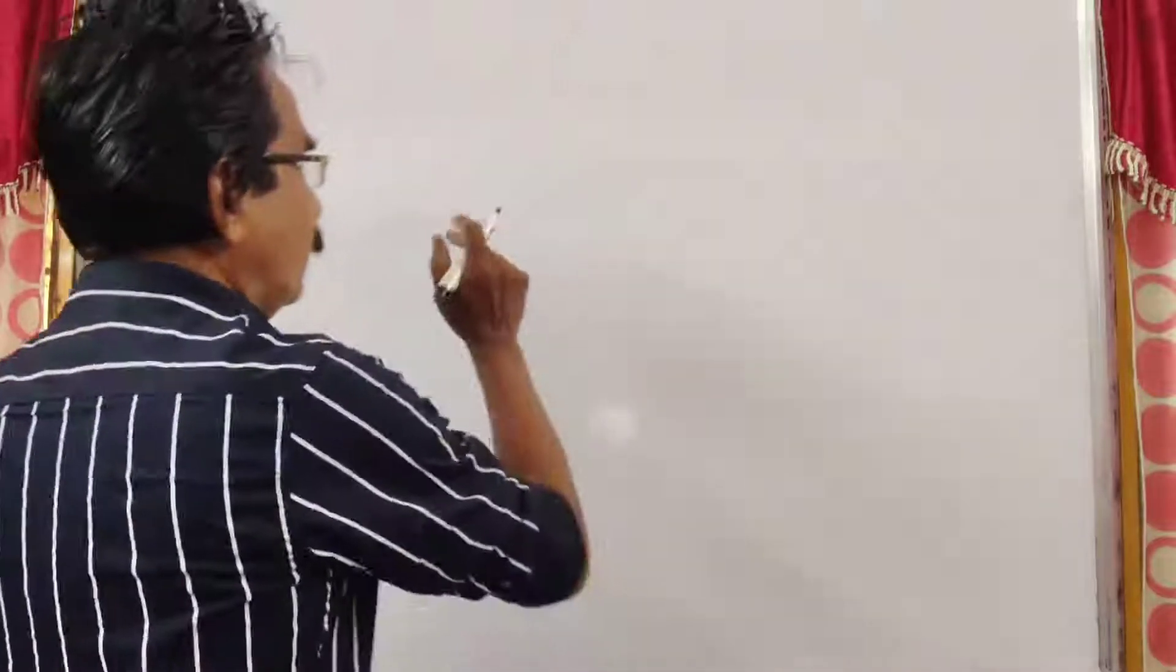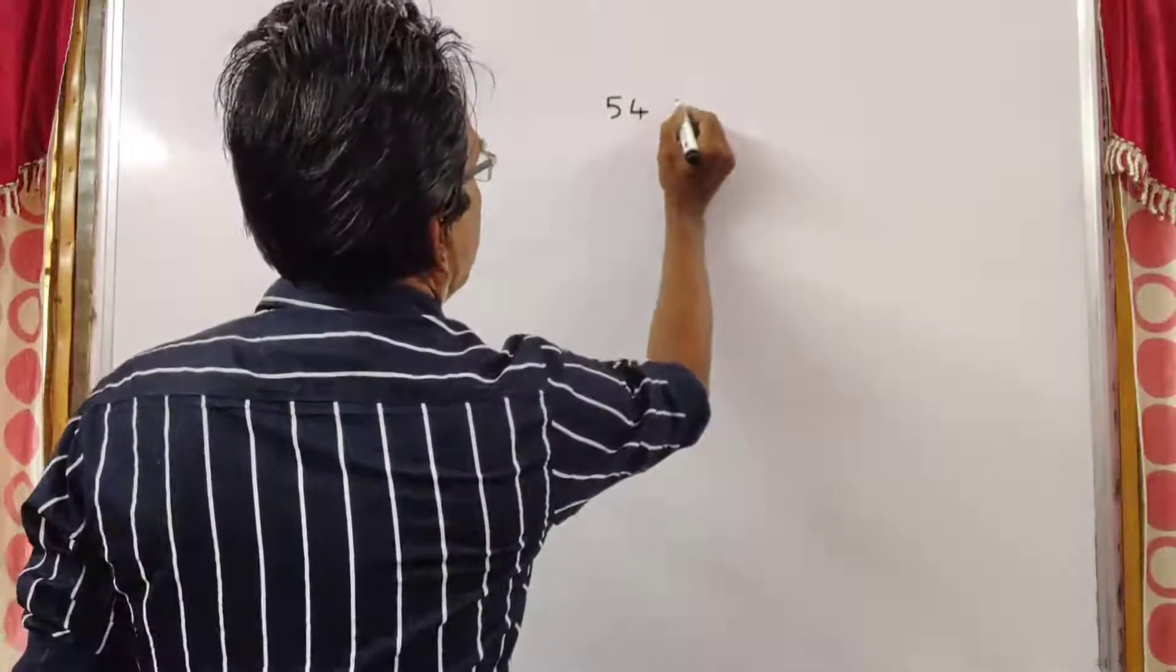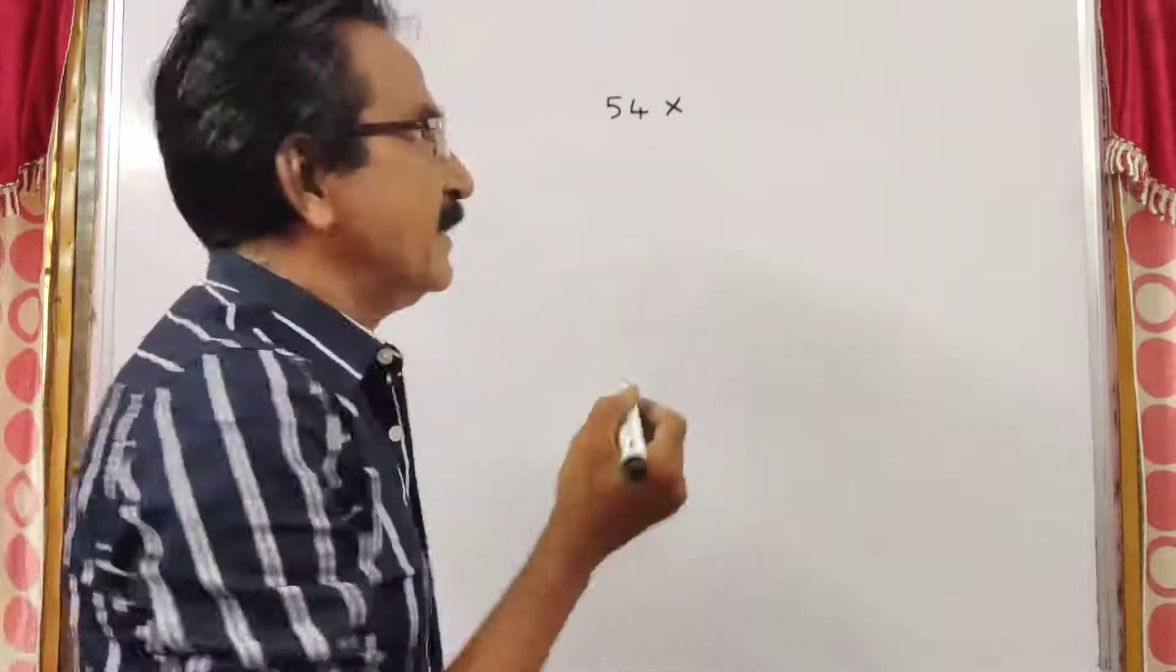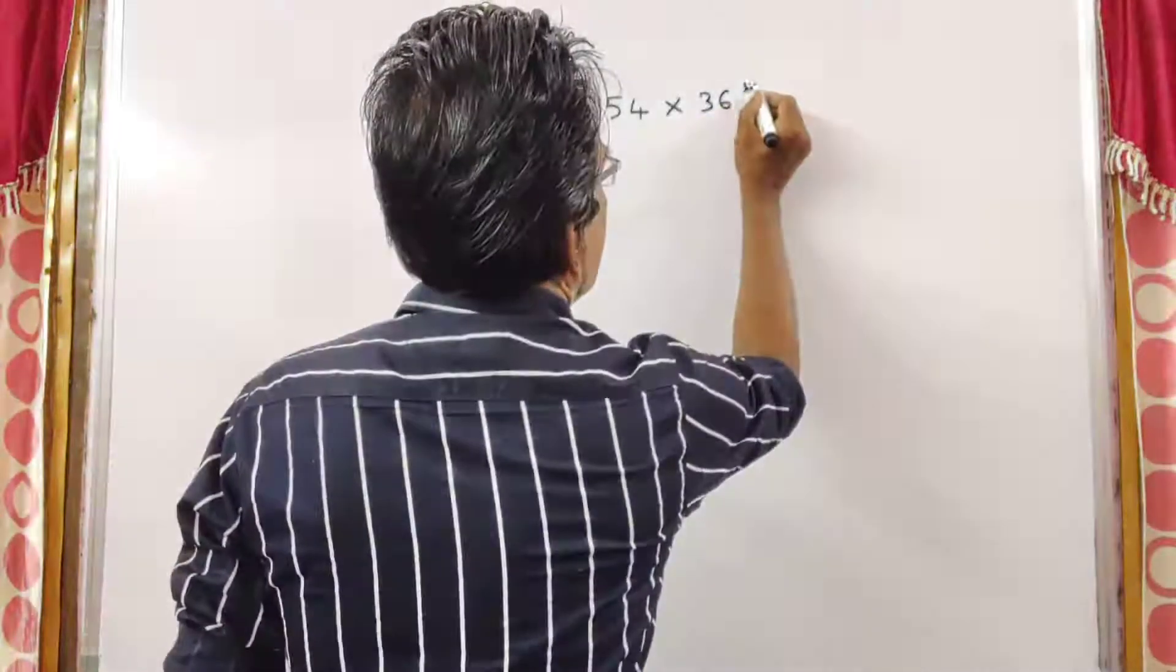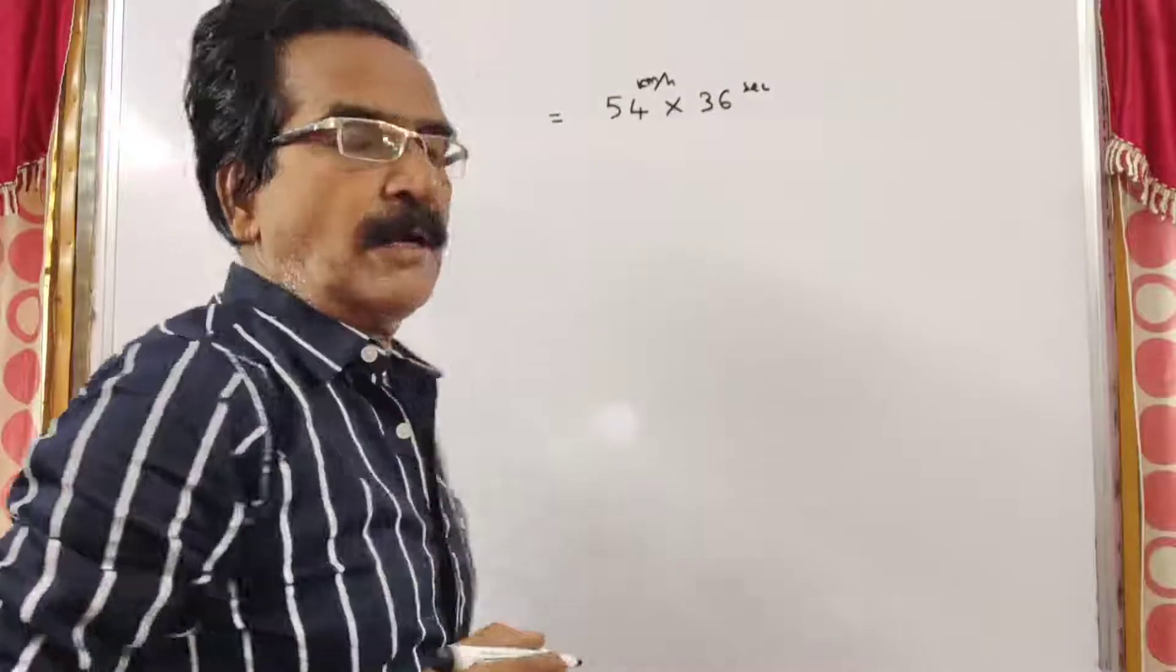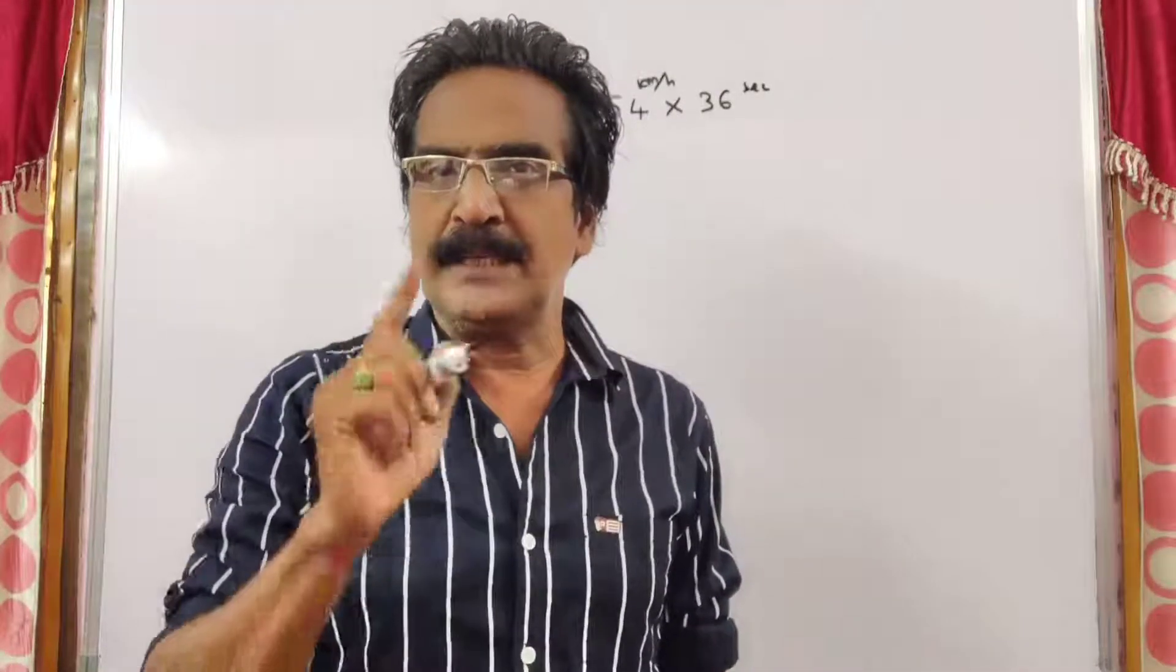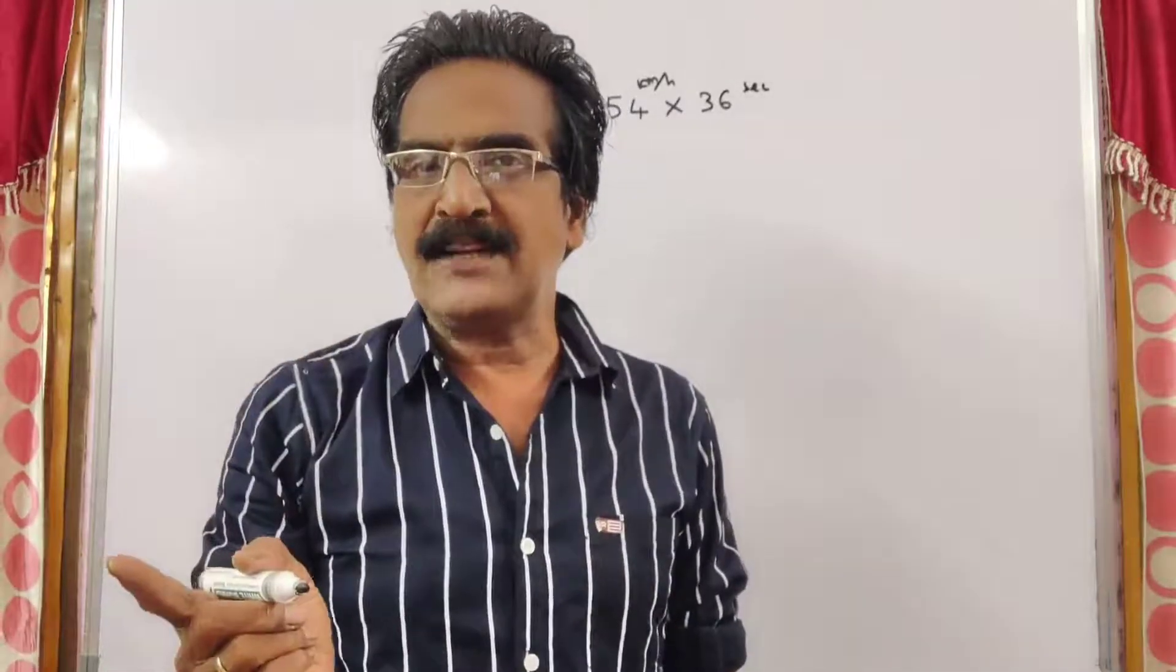This is also a very simple problem. Running at 54 kmph, a train crosses a platform in 36 seconds. By doing the product of velocity into time, we get the total distance. That is, train length plus platform length. Train and platform are both equal.